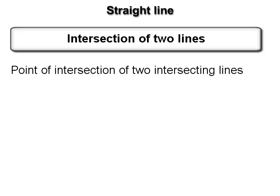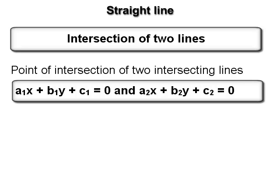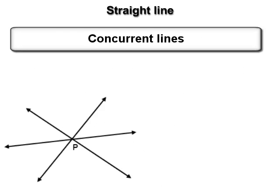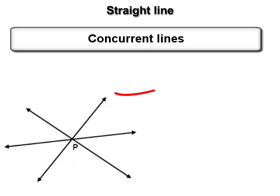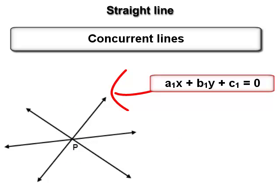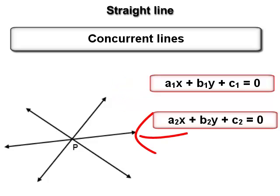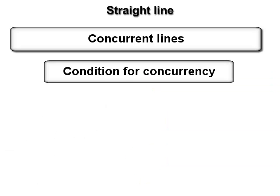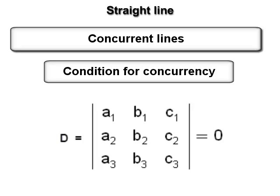Intersection of two lines: the point of intersection of two intersecting lines is obtained by solving their equations simultaneously; Cramer's rule can also be used. Concurrent lines: three distinct lines are said to be concurrent if they have a point in common. For lines a₁x + b₁y + c₁ = 0, a₂x + b₂y + c₂ = 0, and a₃x + b₃y + c₃ = 0 to be concurrent, the determinant |a₁ b₁ c₁; a₂ b₂ c₂; a₃ b₃ c₃| must equal zero.